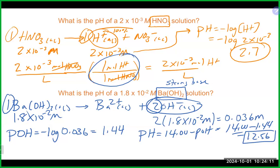Sometimes they won't give you a generic H+ or OH- concentration but something like a strong acid or strong base. You want to make sure you have the right concentration. Most strong acids are monoprotic, so the concentration of the acid equals the concentration of H+ in a 1-to-1 relationship. For strong bases, you may need to adjust the concentration based on the number of hydroxide ions produced.